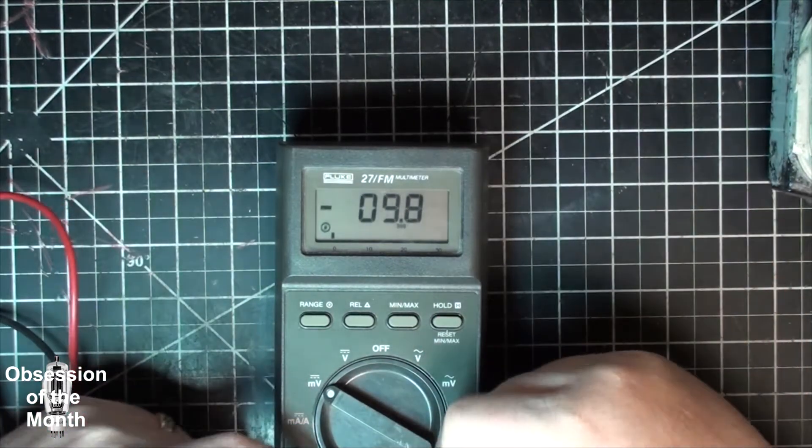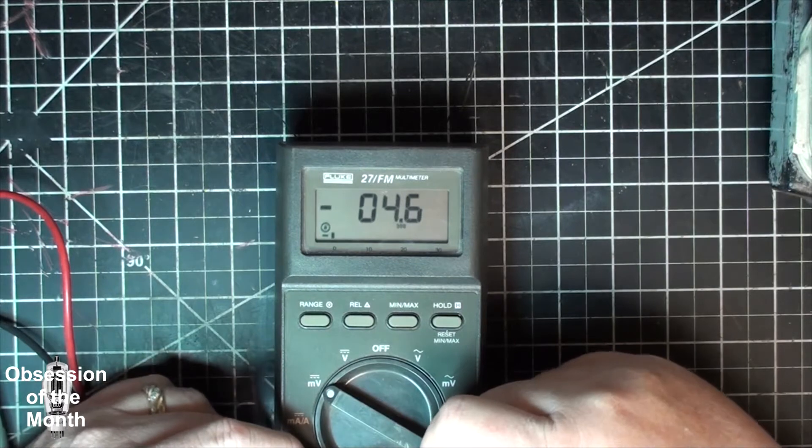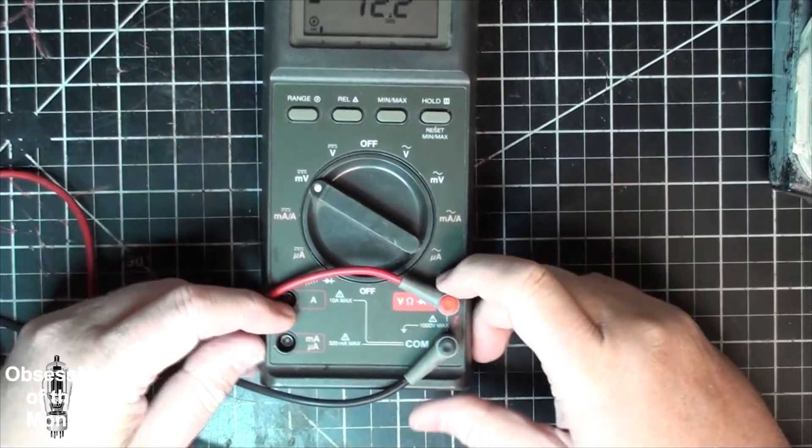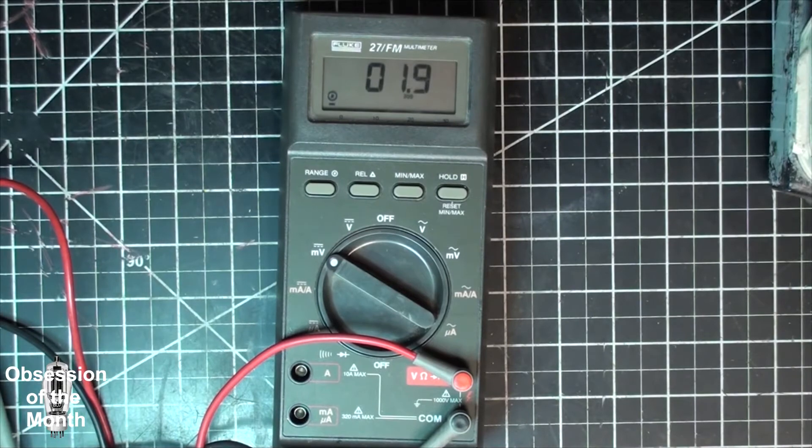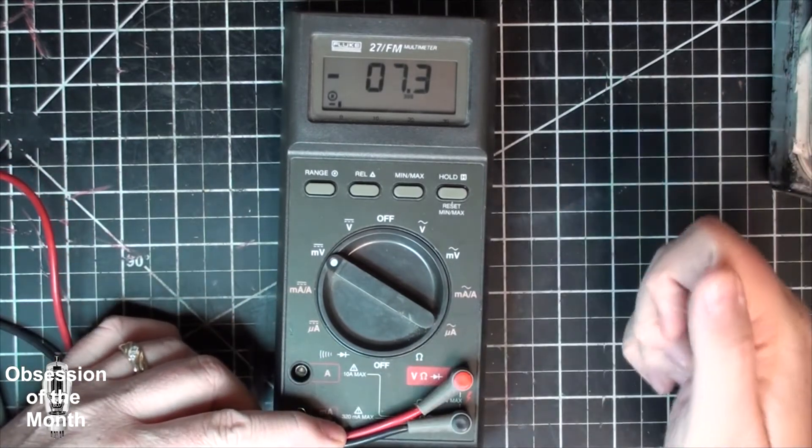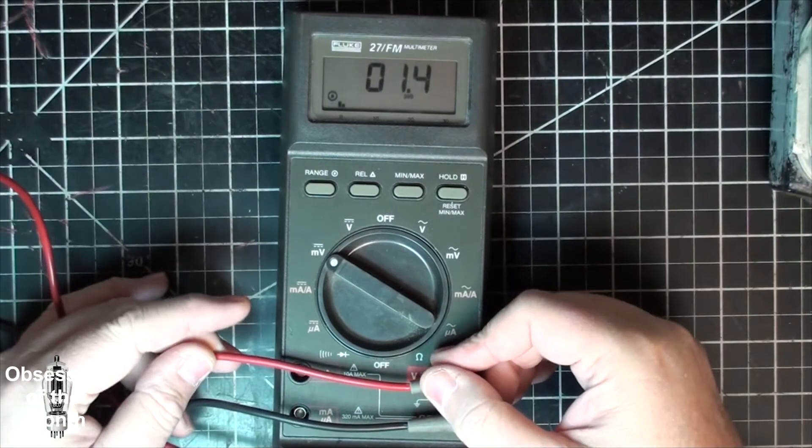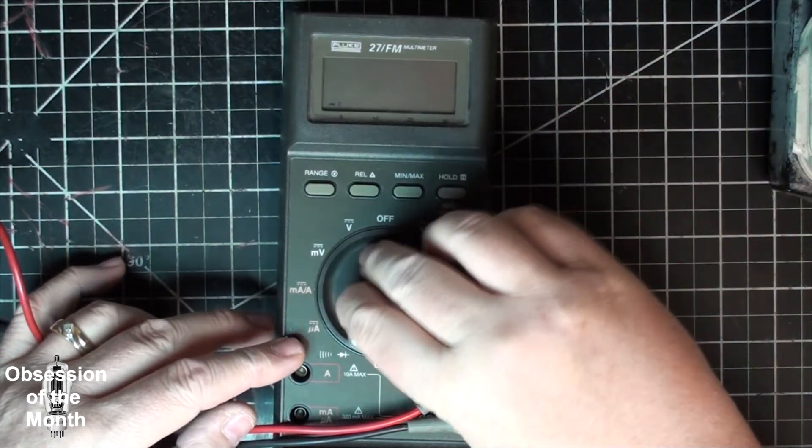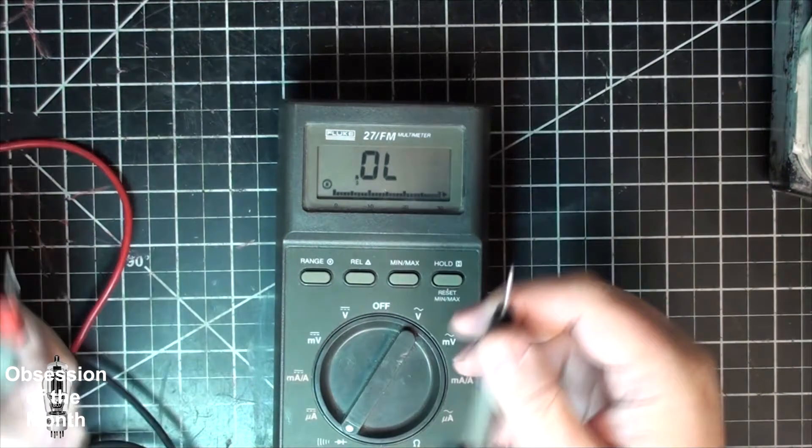It can do AC or DC 1000 volts. It can measure 10 amps. 10 amps max on this, 320 milliamps max on this one, although I think the fuse is actually higher than that. It will measure AC, DC, millivolts, milliamps - I think it will do microamps - and resistance, and it has a continuity of course.